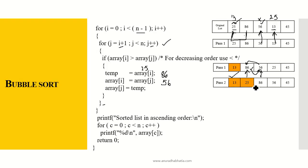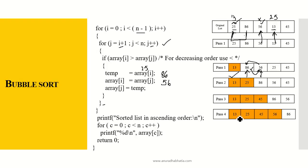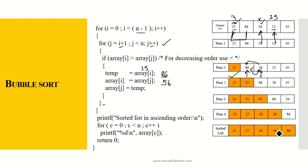After pass two the list is 13, 25, 86, 56, 45. After pass three: 13, 25, 45, 86, 56. After pass four: 13, 25, 45, 56, 86. The sorted list is 13, 25, 45, 56, and 86. Finally, printf prints the sorted list in ascending order using a for loop (c = 0 to c less than n), printing array[c] with %d and a newline. We use int main so return 0 is required. The output is 13, 25, 45, 56, and 86 — the array sorted using bubble sort.